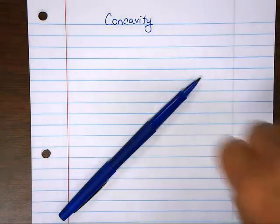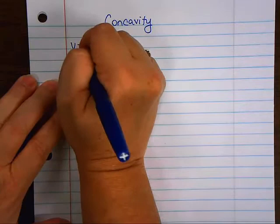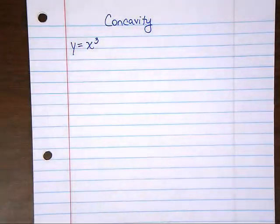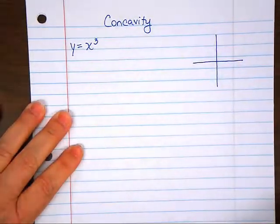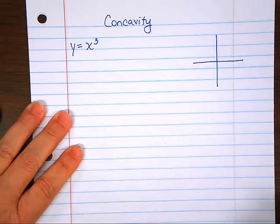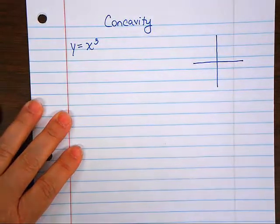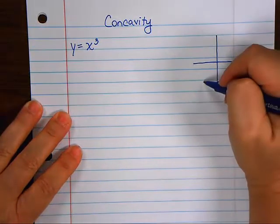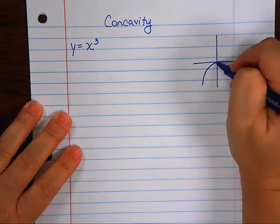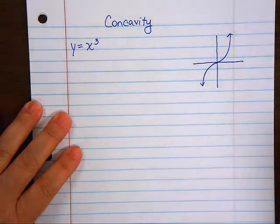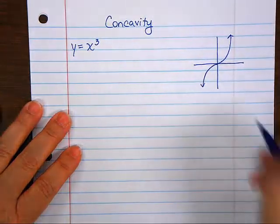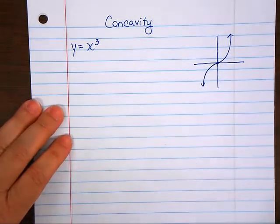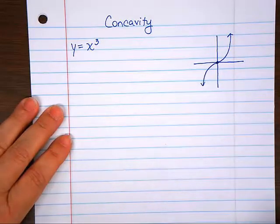We're going to look at a parent function that you're familiar with: y equals x to the third. Do you remember what that graph looks like? It's a wiggle — those of you who took pre-calc know it. It goes up, looks like it's going to turn around, but decides to keep going. What trig function looks like that? Tangent. That graph definitely curves and we're going to talk about how to tell.